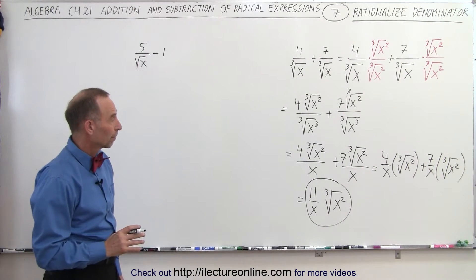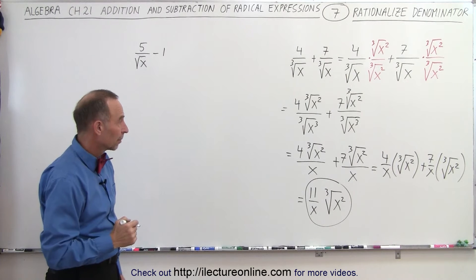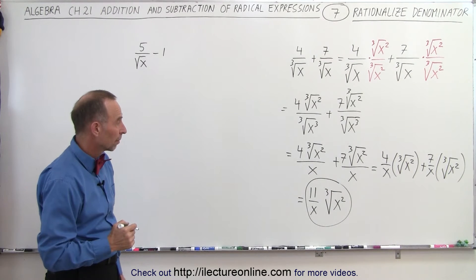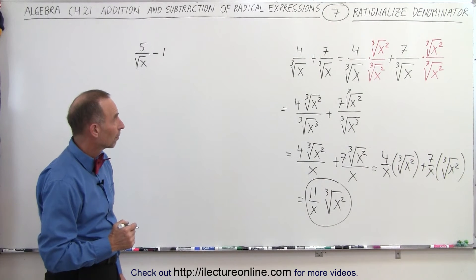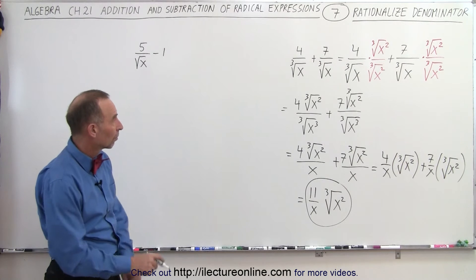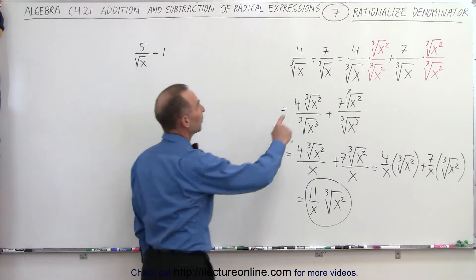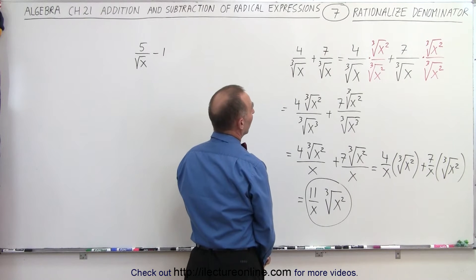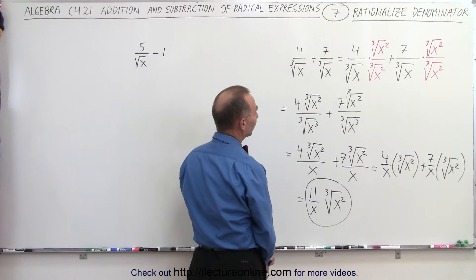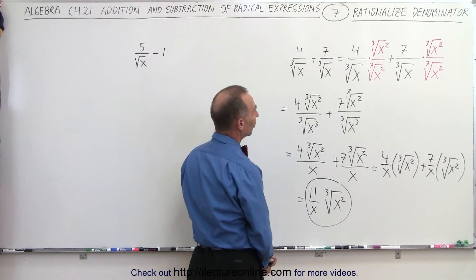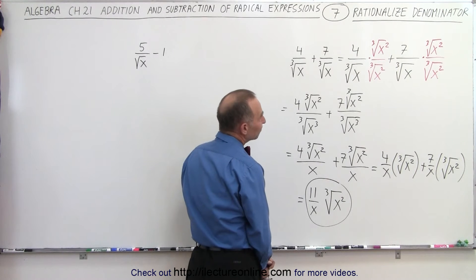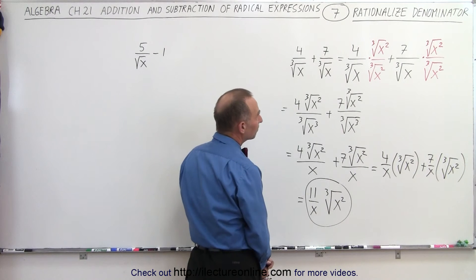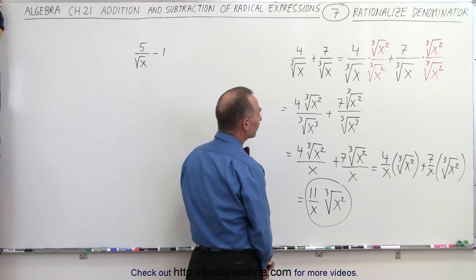A student asks: couldn't you just add the numerators first and then rationalize? Shouldn't you just say 11 over that radical? You could — you want to go 4 plus 7 is 11 over the cube root of x, and then rationalize? Yes, you could. It's a valid technique. Since it's the same denominator, you can show it that way personally.